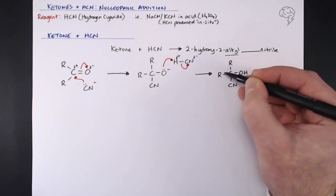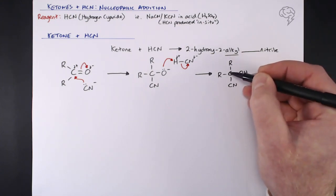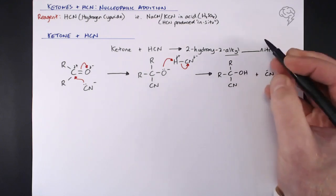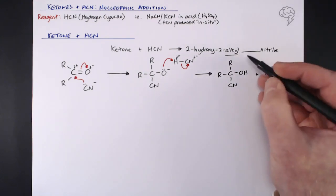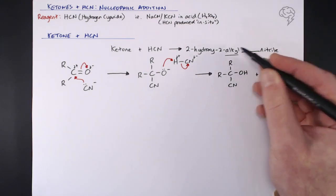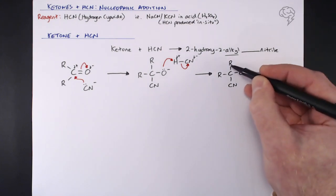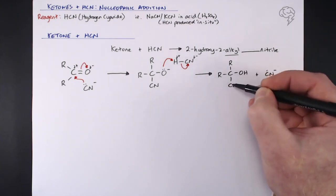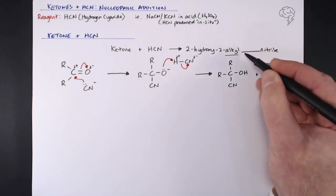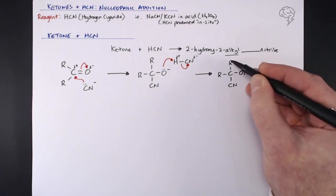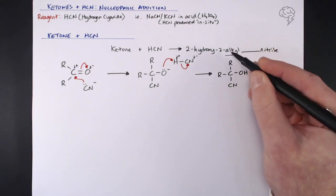If the R groups are the same length, it doesn't matter - you can name it appropriately, like ethyl ethanenitrile or propane propanenitrile. If one is longer than the other, that longest part makes the main name and the shortest R group is considered a side chain.